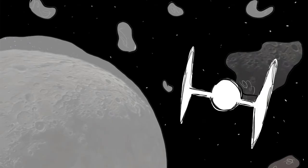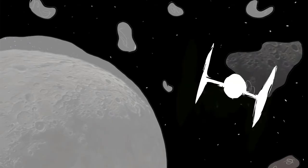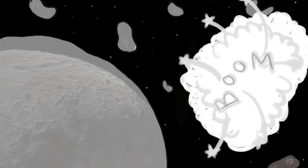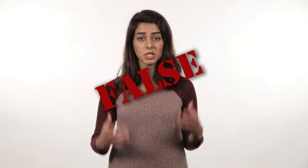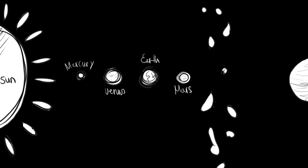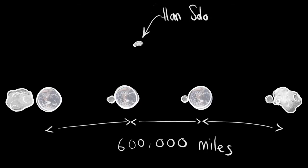But are the asteroids in space that close to each other? No, they're not. Just think of the asteroids in our own asteroid belt. The average distance between two asteroids is around 600,000 miles. That's three times the distance between the Earth and the Moon.